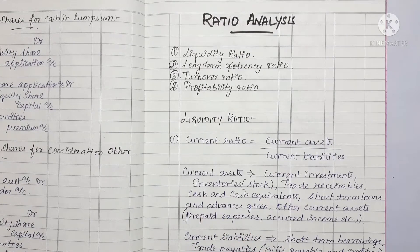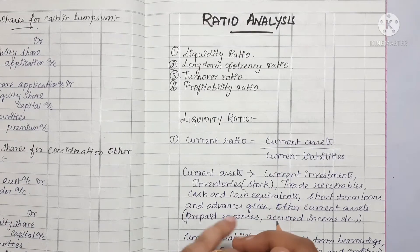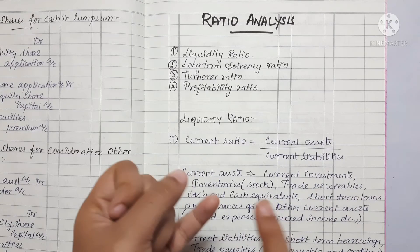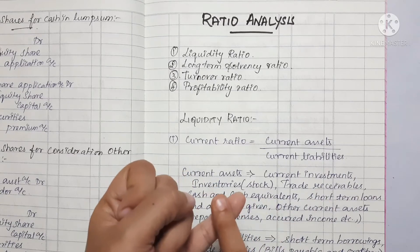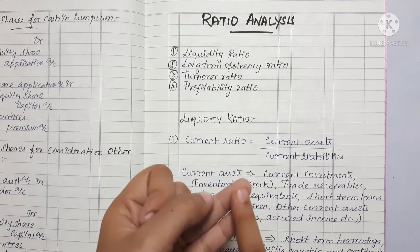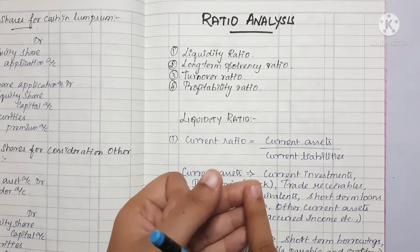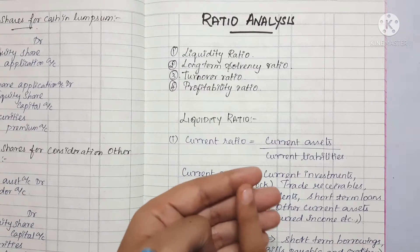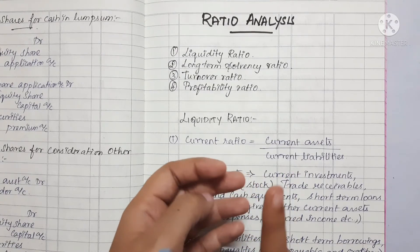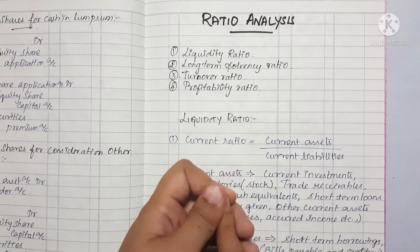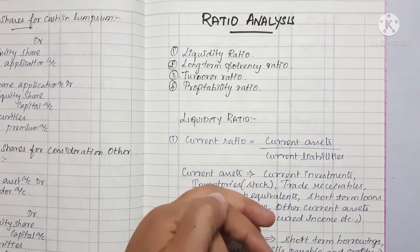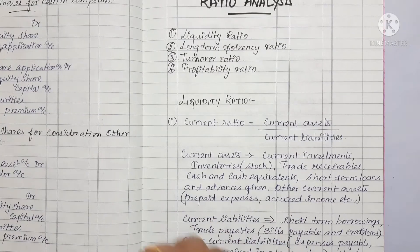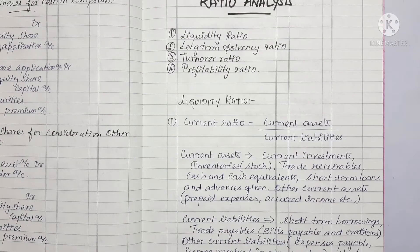First, we can talk about the main ratio categories: Liquidity Ratio, Long Term Solvency Ratio, Turnover Ratio, and Profitability Ratio. If you want to continue with this video, please subscribe and click the bell icon for the next video. Now we will talk about Liquidity Ratio.